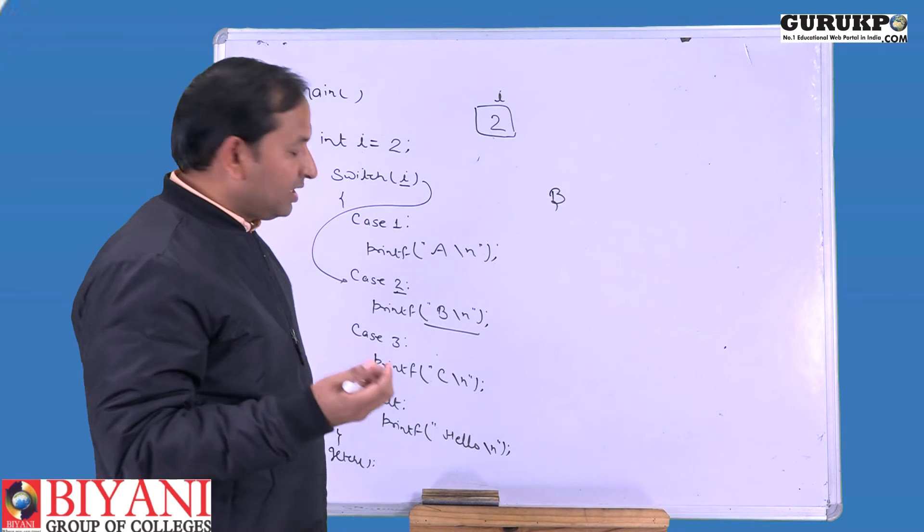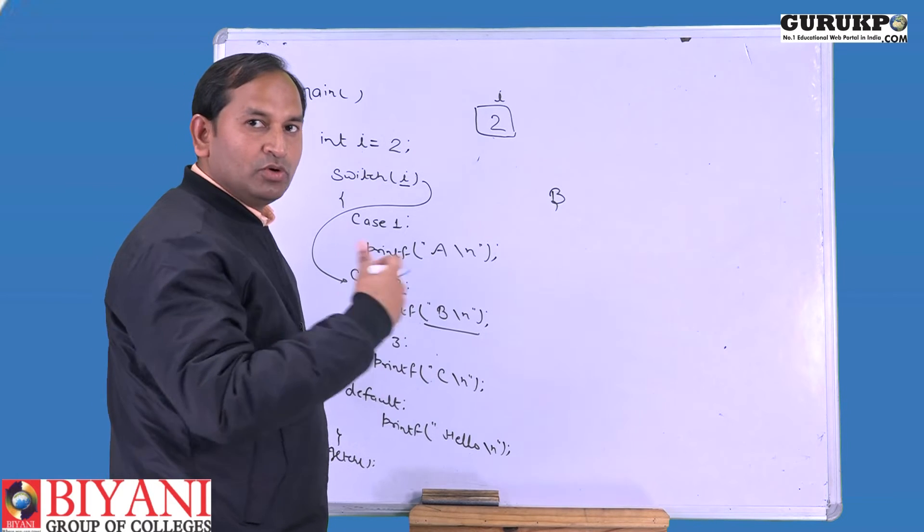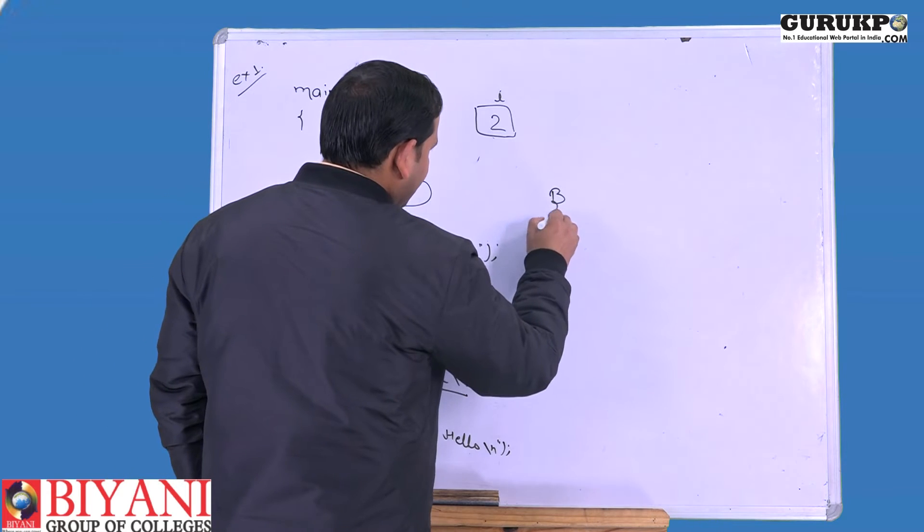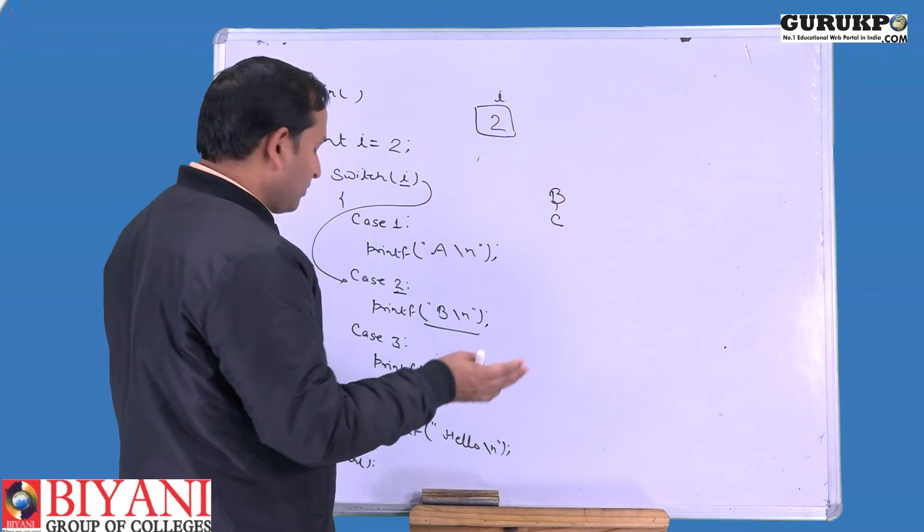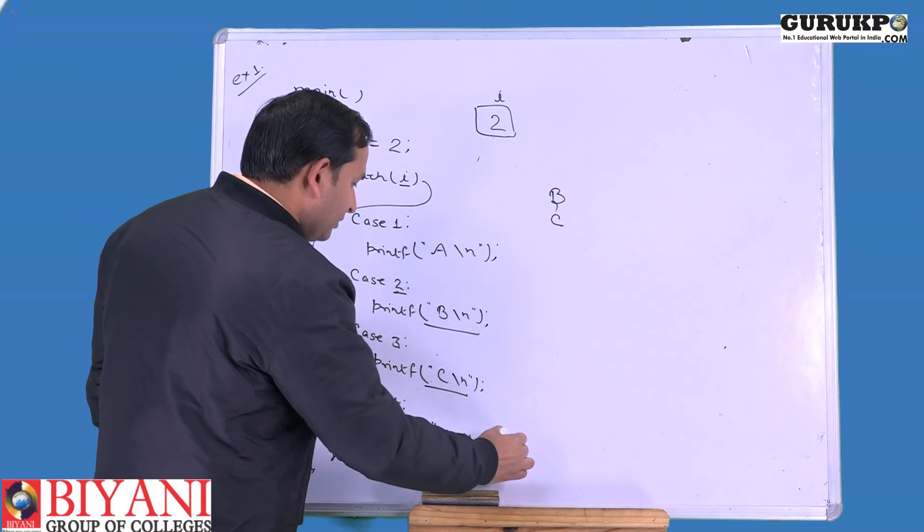But here there is no break statement, so control automatically goes to the next case without any comparing, and it will print C. On the next line, there is again no break statement, so control passes to the next line, default, and it will print hello.